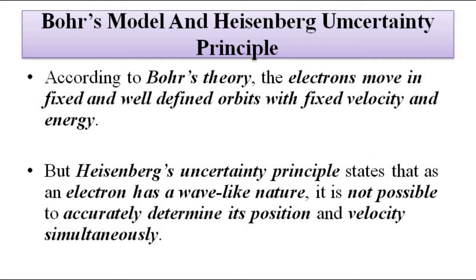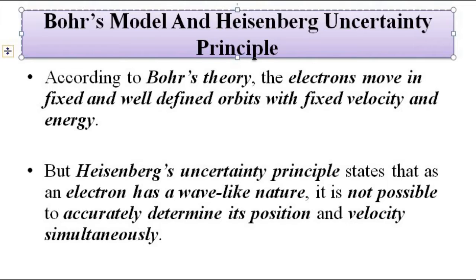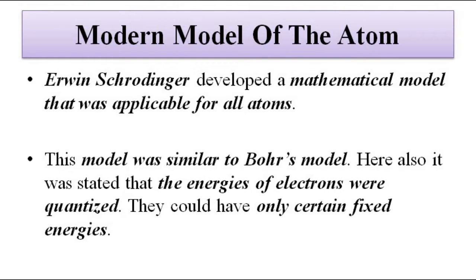In order to explain the movement of electrons around the nucleus, and given that the Heisenberg uncertainty principle states that we cannot determine the exact location of an electron exhibiting wave-like properties, the modern model of the atom was given by Erwin Schrödinger, which is based on the principle of probability.